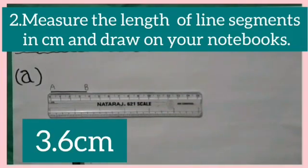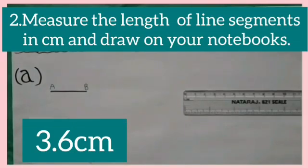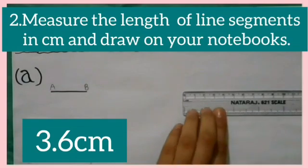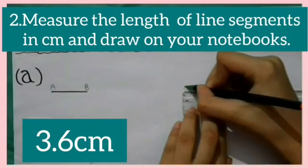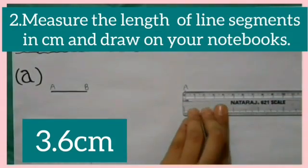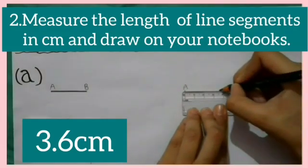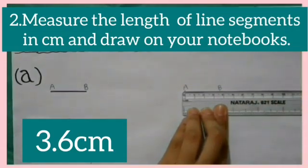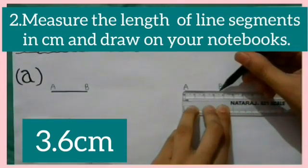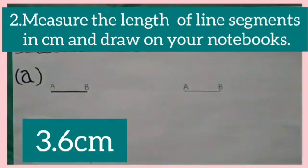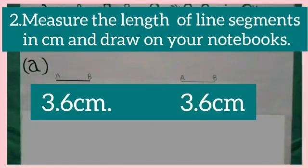Now, we have to draw a line segment of length 3.6 centimeters. For this, first mark a point at 0 and name it as point A. Now, mark another point at 3.6 centimeters and name it as B. Now, with the help of the scale, draw a straight line joining points A and B. AB is the required line segment of length 3.6 centimeters. In this way, you have learned how to draw a line segment of given length.